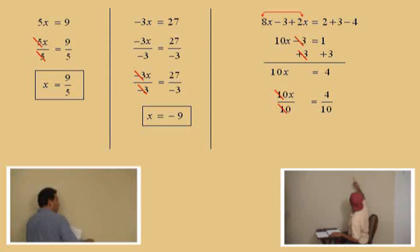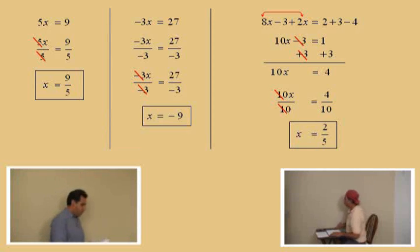Remember, we're in a big time now. How does 4 tenths reduce, Charlie? 2 fifths. Okay. To 2 fifths. Very good. Okay. So, our answer is x equals 2 fifths. And don't forget to box your answer. There you go, Charlie.